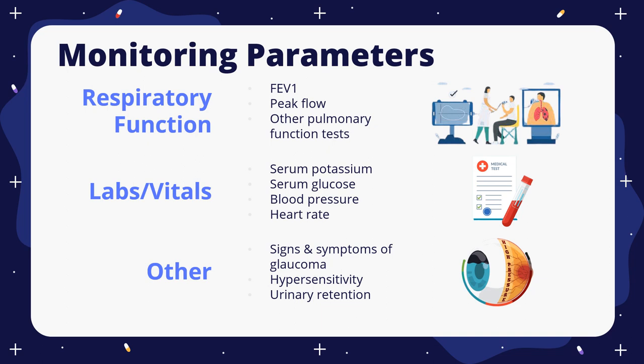Lastly, for other new or worsened eye problems, acute narrow-angle glaucoma is another side effect of Anoro Ellipta, which can cause permanent loss of vision if not treated. Signs and symptoms may include eye pain or discomfort due to pressure, blurred vision, or seeing halos — we will discuss more in the patient consultation section. Additional things to monitor are hypersensitivity to the medication and urinary retention.